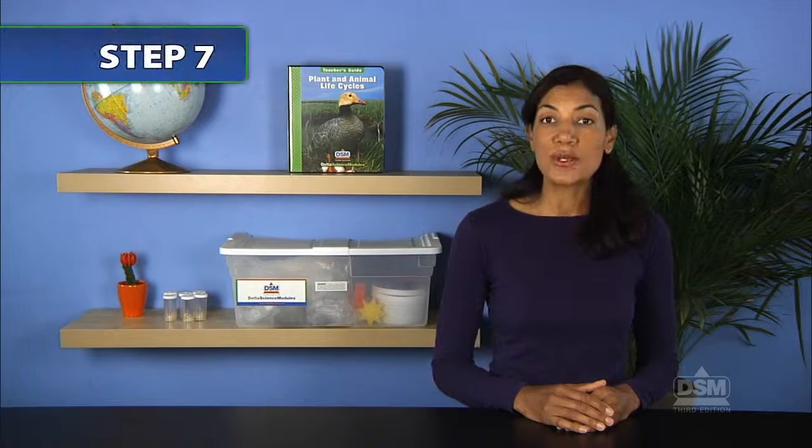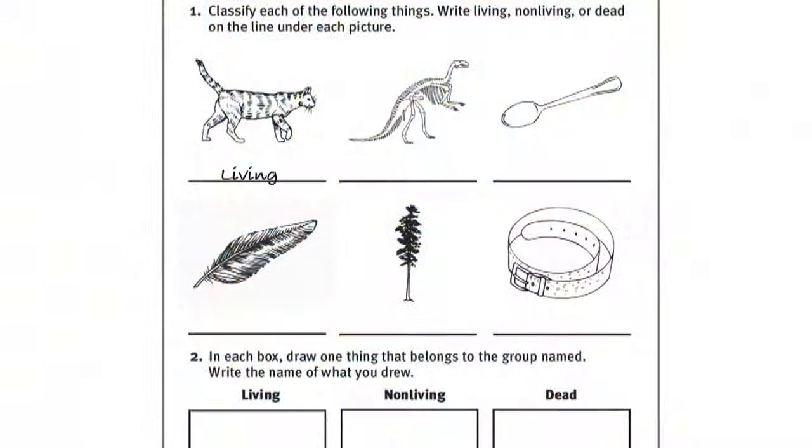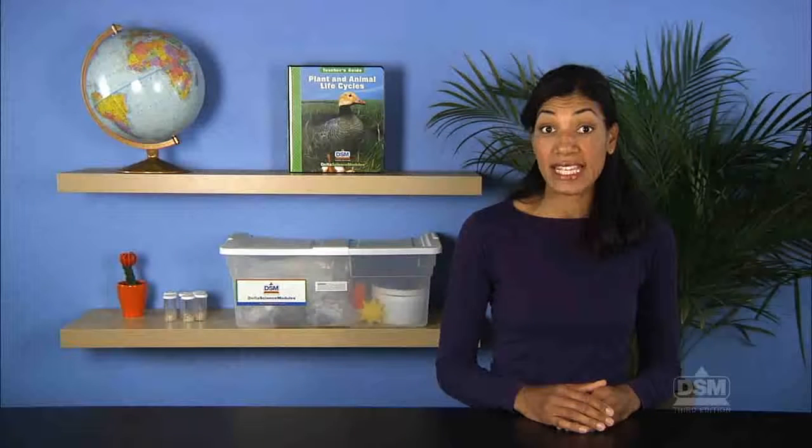Next, distribute a copy of Activity Sheet 1 to each student and have them identify each pictured item as living, nonliving, or dead. Encourage the class to refer to the chart to classify each item correctly.